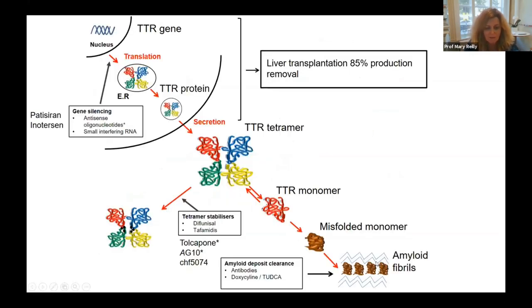The neuropathy is important because it is a major feature of the disease, and there are now a number of different therapies for TTR amyloidosis. Many people will have heard that liver transplant was used a lot, but less so now. The really new kids on the block — the big players — are the gene-silencing drugs. These drugs silence TTR and reduce its expression, and clinical trials have shown they help patients. In the UK and many other countries, they are only licensed for patients who have the neuropathy.